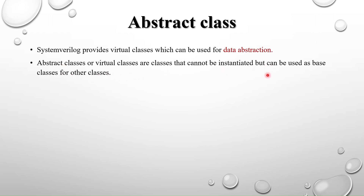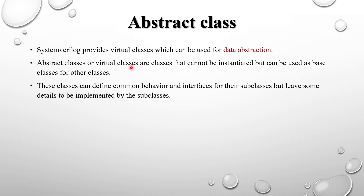Abstract classes or virtual classes are classes that cannot be instantiated but can be used as a base class for other classes. We cannot directly instantiate an abstract class like a normal class — it has to be derived. We'll discuss in detail how to use this abstract class. First I'll explain what is the need of the abstract class — why we need it. These classes can define common behavior and interfaces for the subclasses but leave some details to be implemented by the subclasses.